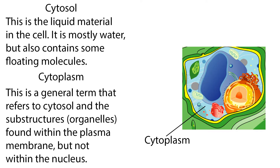Cytosol is the liquid material in the cell. It is mostly water, but also contains some floating molecules. Cytoplasm is a general term that refers to the cytosol and the substructures found within the plasma membrane, but not within the nucleus.